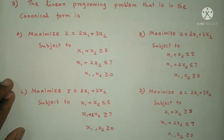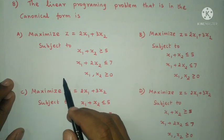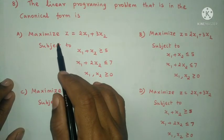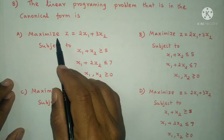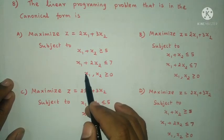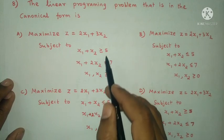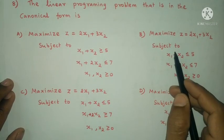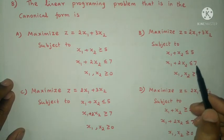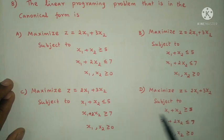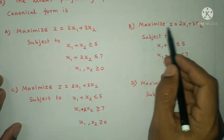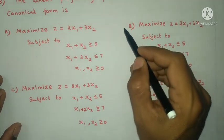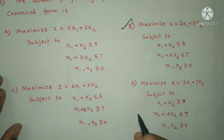Next question: The linear programming problem that is in the canonical form is identified. For the canonical form, the objective type must be maximize and all constraints must be less than or equal to. Among the options, option B satisfies both conditions. Option B is the answer.